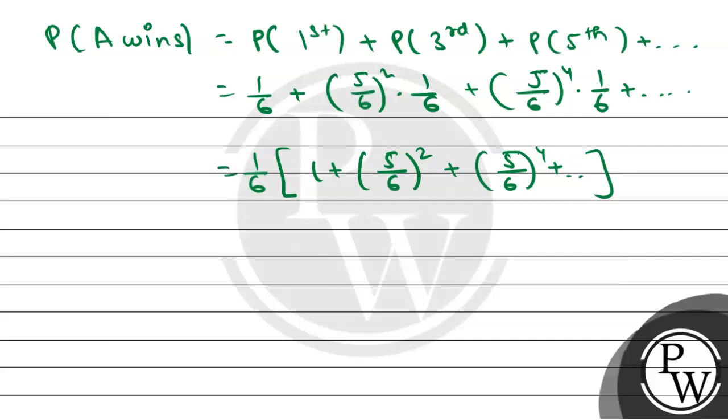The sum of infinite GP series A plus AR plus AR² plus like this equals A divided by 1 minus R. Now here A value is 1 and R value is (5/6)².